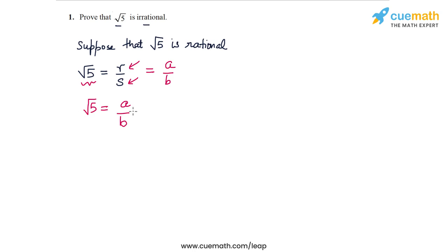Okay, now if we square both sides of this relation, we get 5 equal to a square by b square. So I have squared this relation. And I get 5 is equal to a square by b square, which I can write as a square equal to 5 b square.